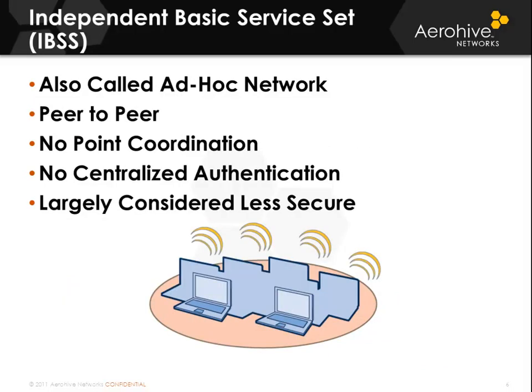Independent basic service sets are ad hoc networks used for peer-to-peer wireless connectivity. There is no access point and they're meant for a temporary configuration. There is no centralized authentication, so they are considered largely less secure than a standard infrastructure-based network. Anyone with admin rights on their device can join an ad hoc network. Ad hoc networks can be made more secure by using WPA2 with a very long, complex pre-shared key and AES encryption. Unfortunately, most users who set up ad hoc networks are not familiar enough with advanced security and simply create them with no security at all. You may have seen an ad hoc SSID of 'free public Wi-Fi.'